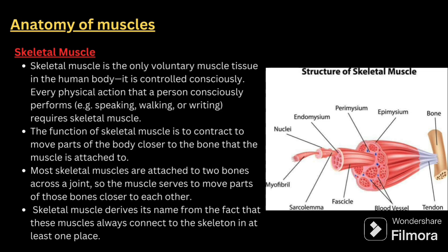Next comes skeletal muscle. Skeletal muscle is the only voluntary muscle tissue in the human body — it is controlled consciously. Every physical action that a person consciously performs, like speaking, walking, and writing, requires skeletal muscles. The function of skeletal muscle is to contract to move parts of the body closer to the bone that the muscle is attached to. Most skeletal muscles are attached to two bones across a joint, so that the muscle serves to bring those bones closer to each other. Skeletal muscle derives its name from the fact that these muscles always connect to the skeleton at one place.